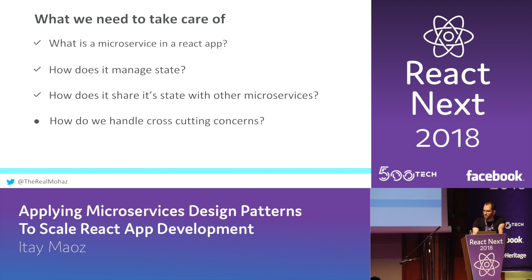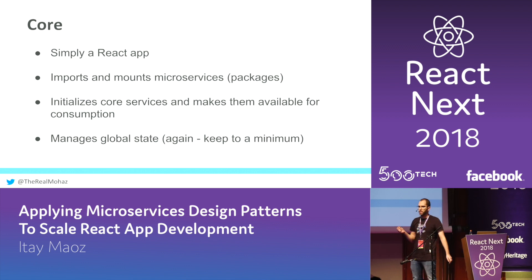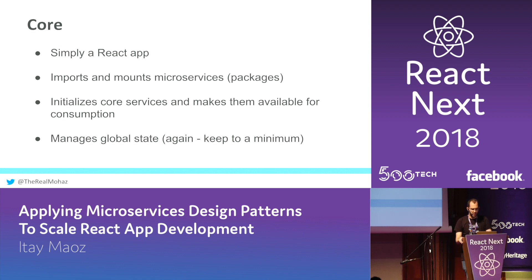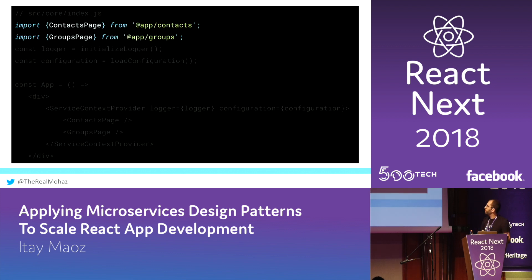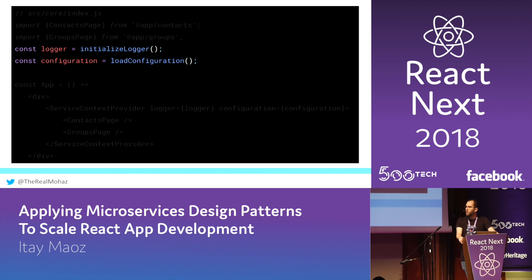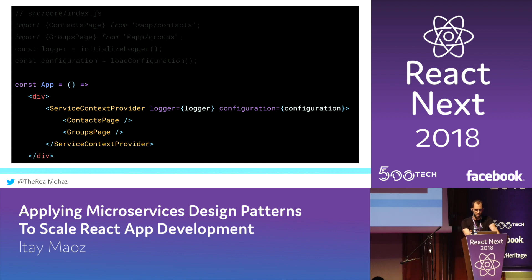How are we going to handle cross-cutting concerns? This is where we go into the core layer. The core layer is just a simple React app with three jobs: one, it needs to import and mount our microservices and components; two, it needs to initialize the core services and make them available for consumption by the packages; and three, it needs to manage the global state. In a simple example, we import two components from two different packages — a contacts page and a groups page — initialize core services like a logger and a configuration store, and using React's context feature, we make those services available for consumption.